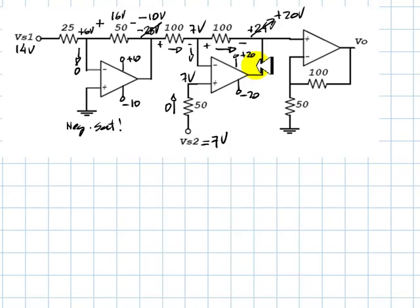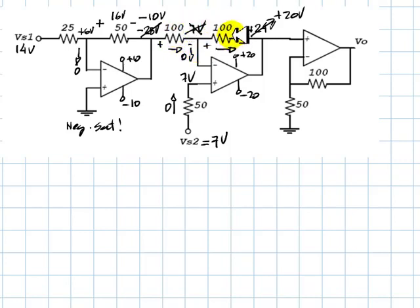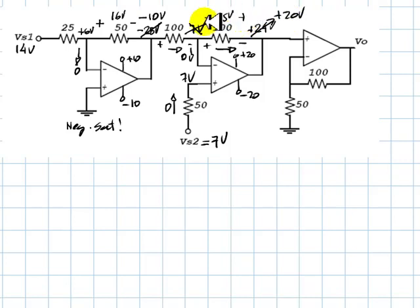But we need to prove it. We need to prove the op-amp is positive saturated — that Vp = 7 volts is greater than Vn, whatever voltage we have here, which will not be 7 volts anymore. Because this current is 0, what we have is a voltage divider between negative 10 volts and positive 20 volts — 30 volts divided between two equal resistors. So the drop in each resistor is 15 volts. This side is at 20 volts; we drop 15. So Vn = 5 volts, which is less than Vp = 7 volts. We have proven this op-amp is positive saturated and the output voltage is positive 20 volts.